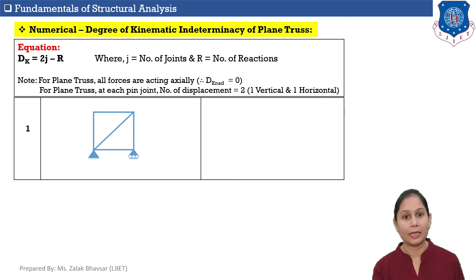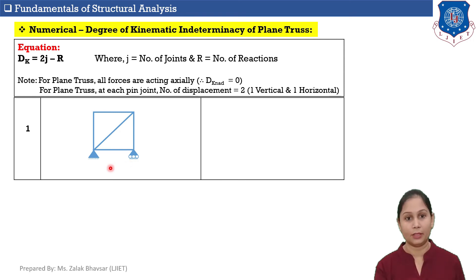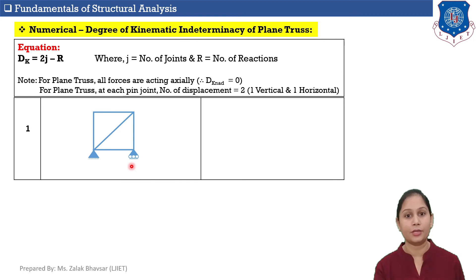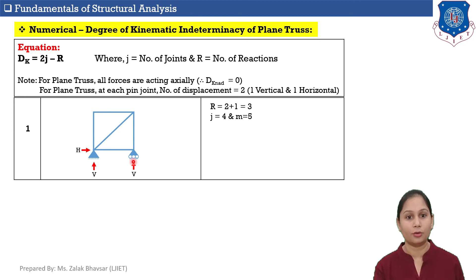In the given figure, one plane truss has two supports — one hinge support and one roller support. We need to calculate DK of this given truss. For number of reactions: hinge support gives 2 reactions, roller support gives 1, so R equals 2 plus 1 equals 3.